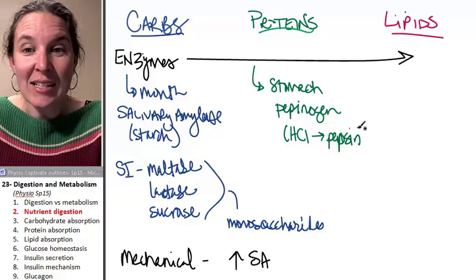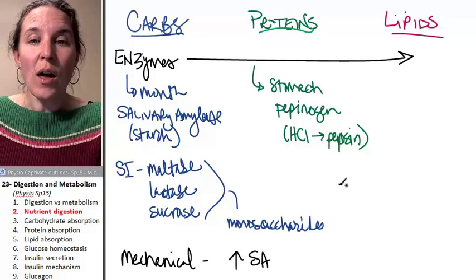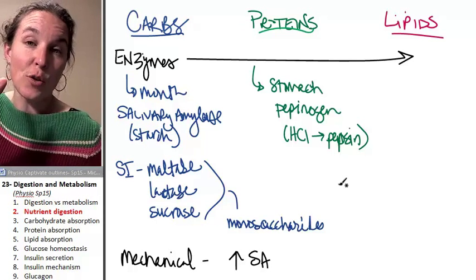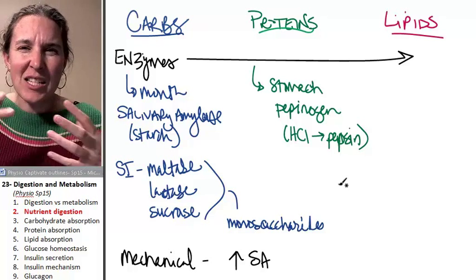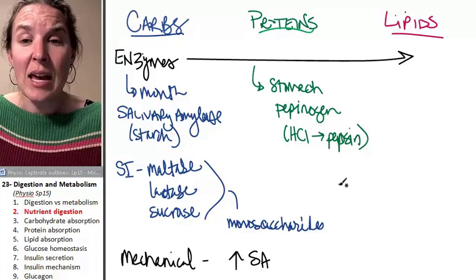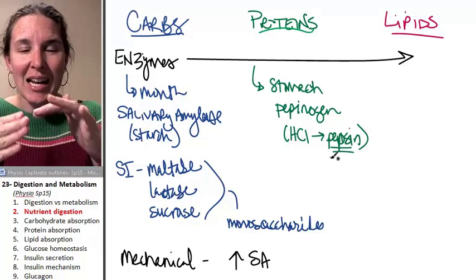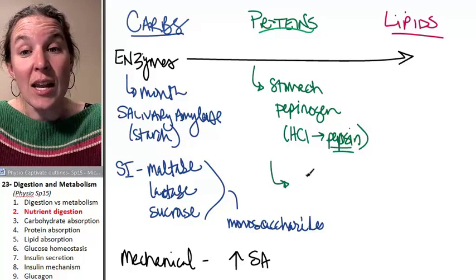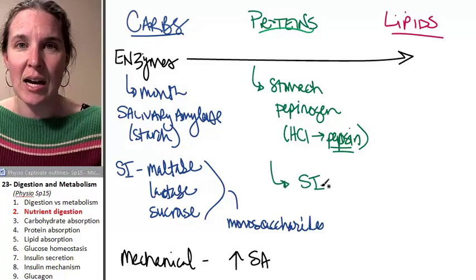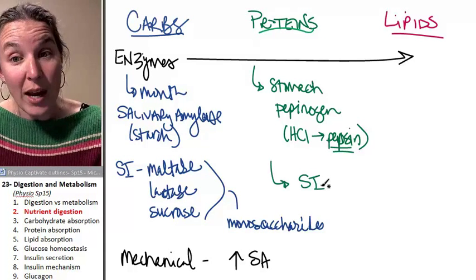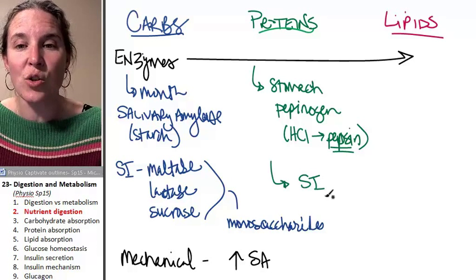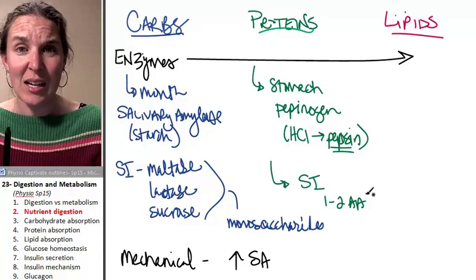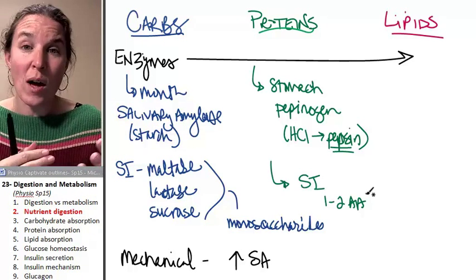Pepsin is the active protein digester. The low pH of the stomach will actually denature the proteins and fold them in a way that makes them spread out a little bit more. Then the active enzyme pepsin can come in and cleave the amino acids into smaller chunks. There is more digestion in the small intestine. All sorts of different enzymes break proteins down into one to two amino acid long chains.